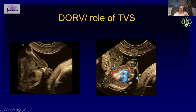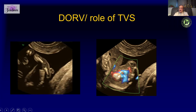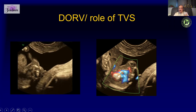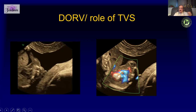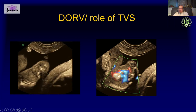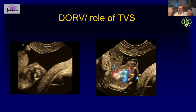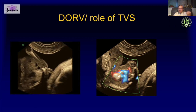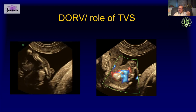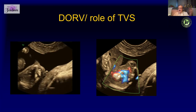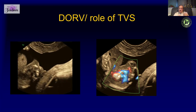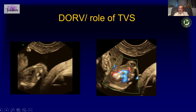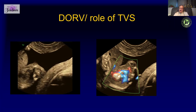Whenever you suspect something, you should do a transvaginal scan. I would go one step further and say that whenever you finish your NT scan, always put in a transvaginal probe and try to pick up as much as possible — you might find something you did not see on the transabdominal scan.